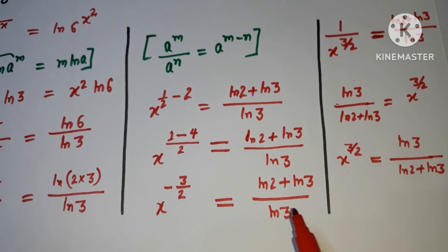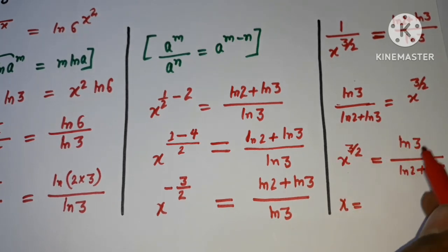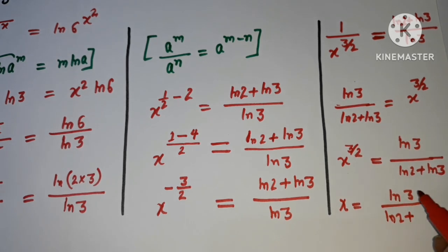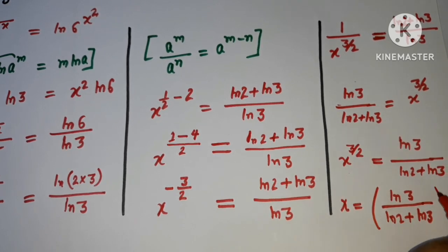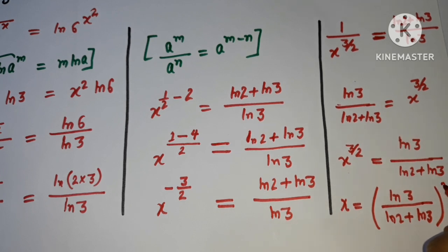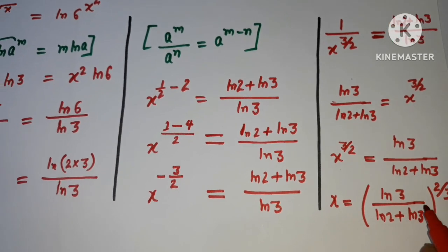Now we need to isolate x. The exponent 3/2 moves over as the reciprocal power 2/3. So x equals (ln 3 divided by (ln 2 plus ln 3)) to the power 2/3. This is our final solution.